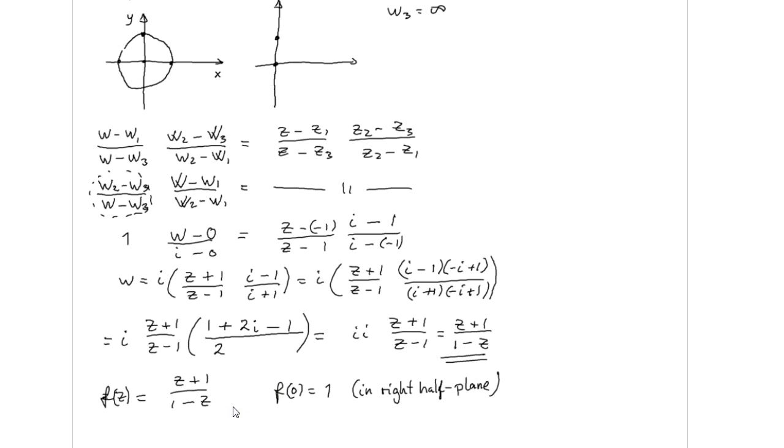So let's take the point 0. f of 0, we substitute z here with 0 and obtain 1 over 1 is equal to 1. So we see that this point 0 is mapped into the